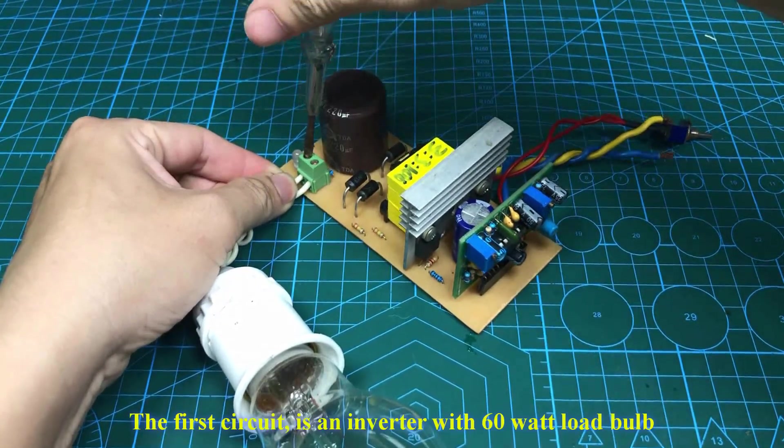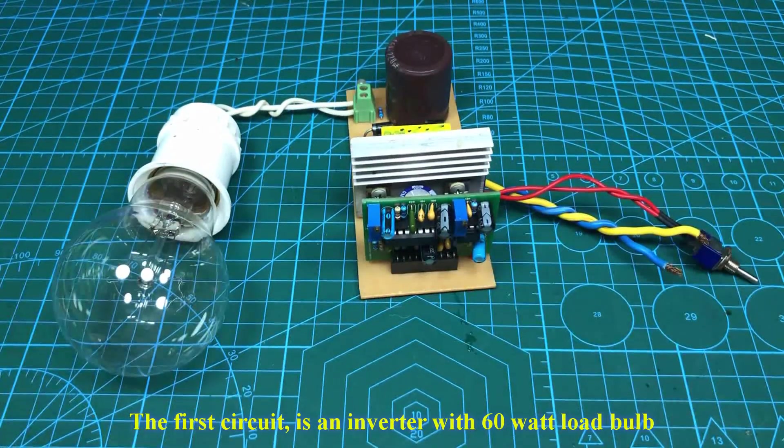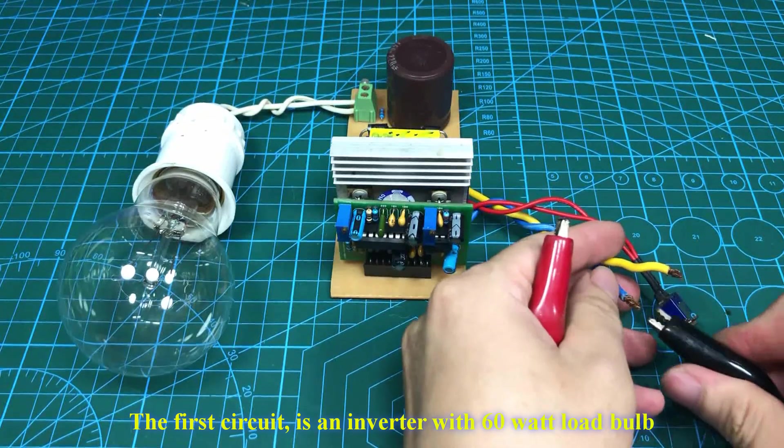The first circuit is an inverter with a 60 watt load bulb. Input power supply is 12 volts.